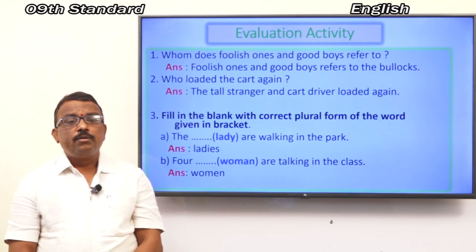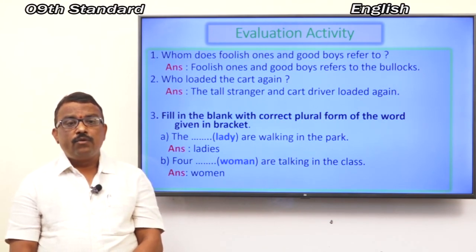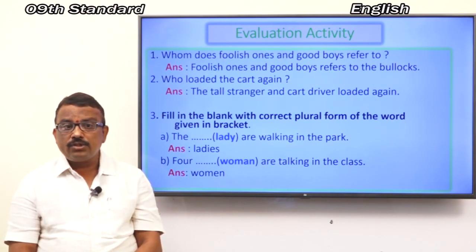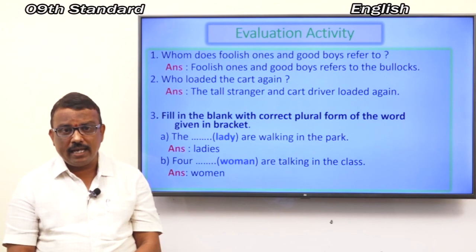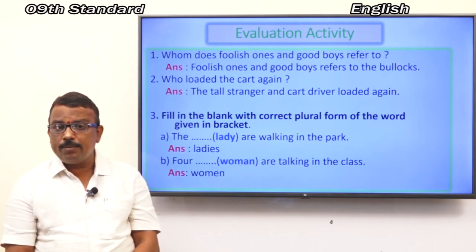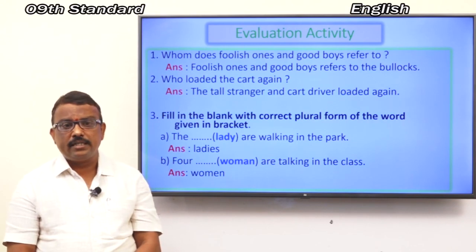Now B: Four dash (woman) are talking in the class. What should we put? Women — W-O-M-E-N.